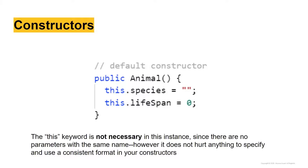The 'this' keyword is not strictly necessary in this instance since there are no parameters with the same name. However, it doesn't hurt anything to specify it and use a consistent format in your constructors. So rather than just writing 'species = empty string' or 'lifespan = 0', I personally like to use 'this' because I think it aids readability and clarifies exactly what you're talking about — this species for this object.